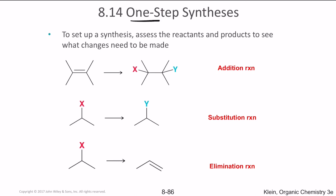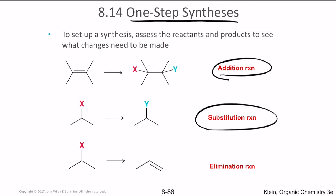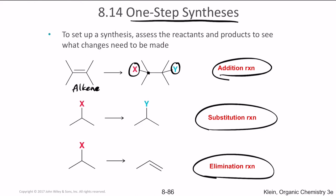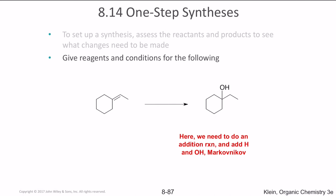These are what we call one-step synthesis reactions; we discussed three types: addition, substitution, and elimination. Addition involves taking an alkene and adding two groups to the carbons containing the alkene. Substitution involves substitution of a functional group on the alpha carbon. Elimination involves the removal of the functional group.